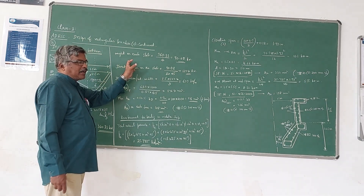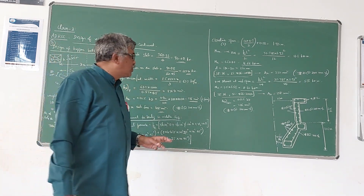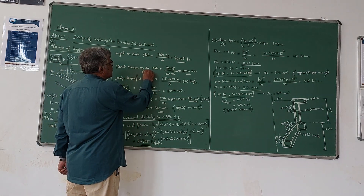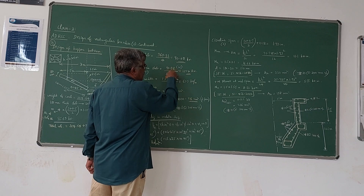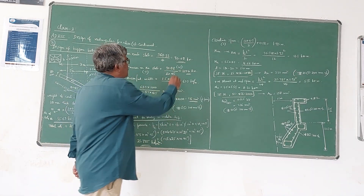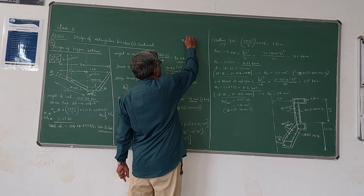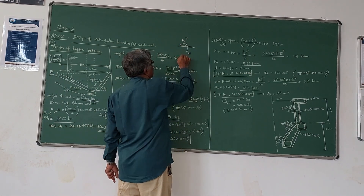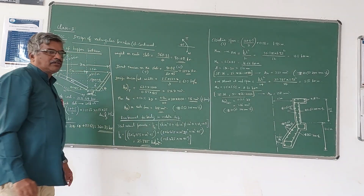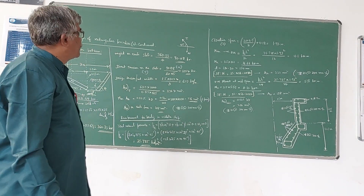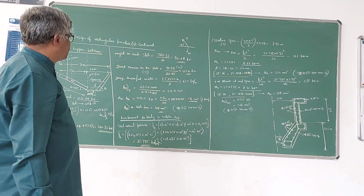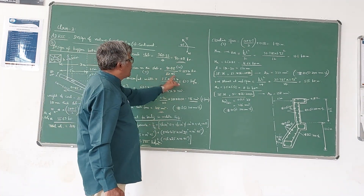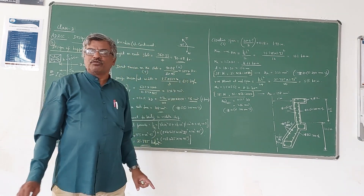As I explained in the first lecture, the direct tension T is given by W divided by sin 45, because the tension force acts at 45 degrees. For equilibrium, T times sin 45 equals W, so therefore T equals W divided by sin 45, which gives 1.74 kilo Newton. Now, per meter width — since the total width is 3 meters — dividing by 3 gives the tension per meter width.